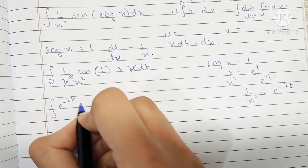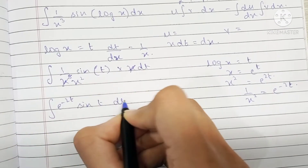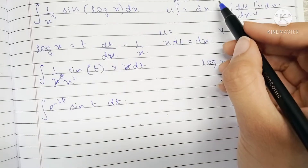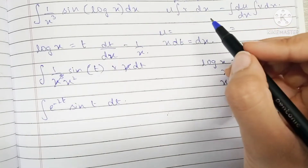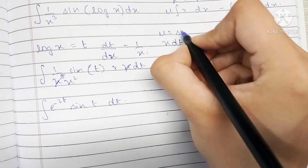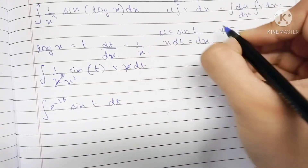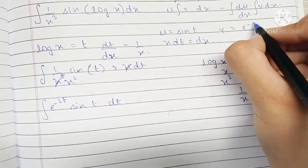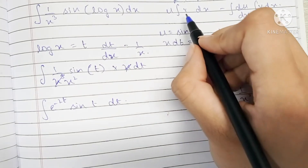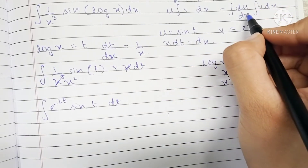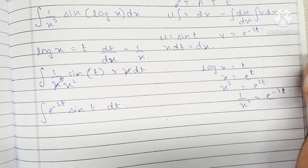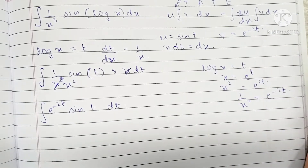Now using the LIATE rule, I'm going to place the trigonometric term as the u term and the exponential term as the v term in the by-parts formula, which is u times the integration of v dx, minus the integration of the differentiation of u times the integration of v dx.